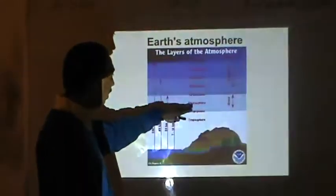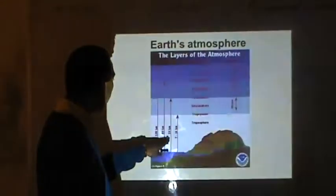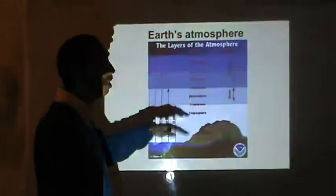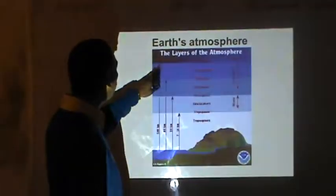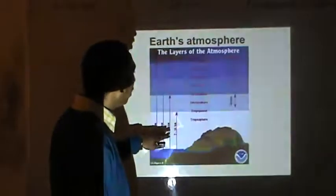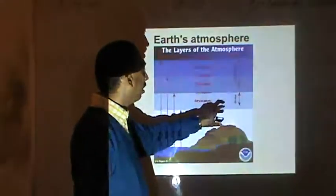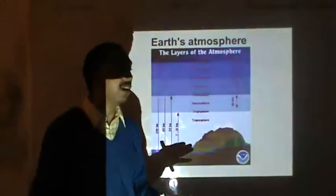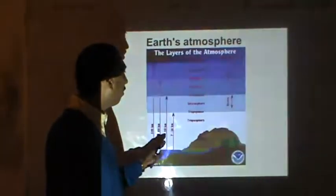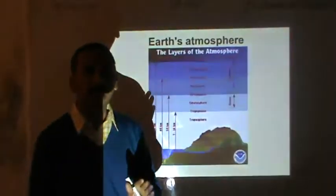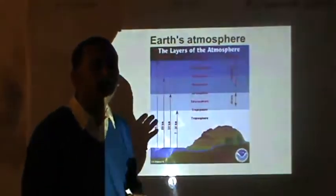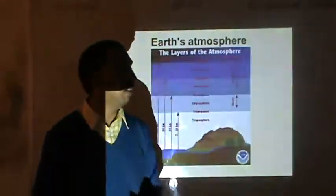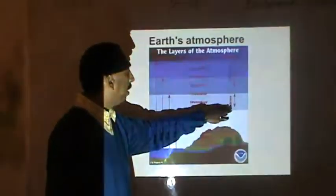Above this there is a tropopause between the stratosphere and the mesosphere. When you travel up to 80 km, we have the mesosphere, and above that there is a thin layer known as the mesopause. Then we have the thermosphere, which extends up to 500 km. The stratosphere concentration is up to 40 to 50 km, and there we have the ozone concentration. Ozone is very important for us because it prevents ultraviolet light from reaching the earth's surface.